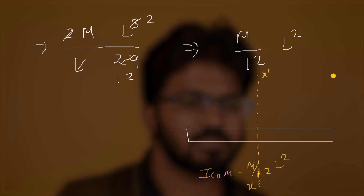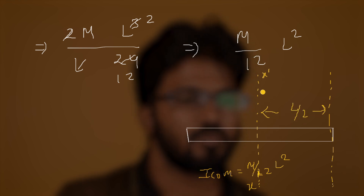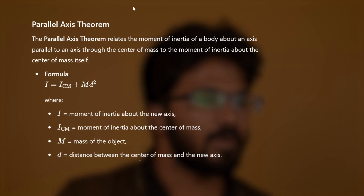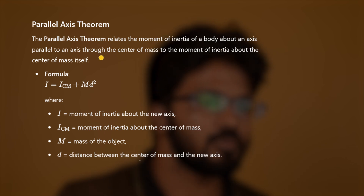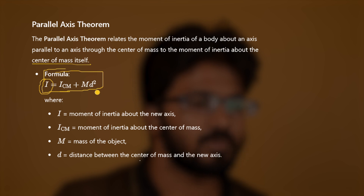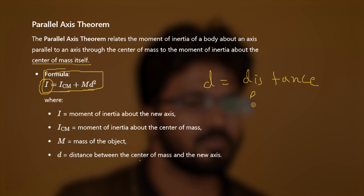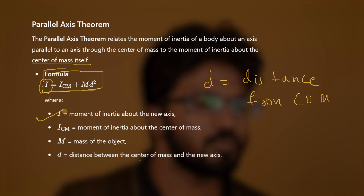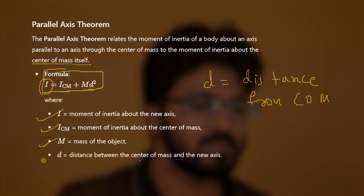We can also find the moment of inertia about another axis parallel to this one at a distance l/2 from the center, using the parallel axis theorem. The parallel axis theorem relates the moment of inertia about any axis to the moment of inertia about the center of mass. The formula is: I = I_cm + md², where d is the distance from the center of mass to the new axis.